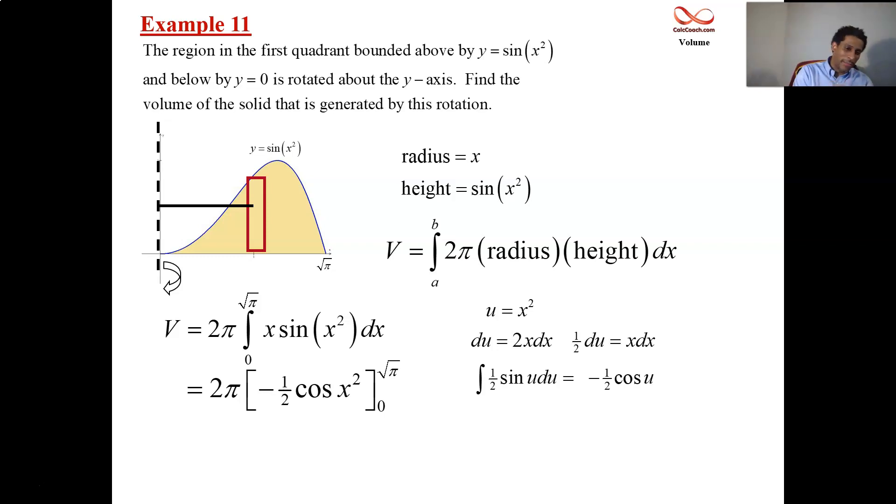We're ready to put in the root π and the zero, and we'll find out that we square that. Root π's quantity squared is going to be cosine of π, and then cosine of zero. Cosine of π is negative one, cosine of zero is one. They don't cancel, they're subtracted. And now there's a negative π on the outside. The two and a half canceling each other out. The answer is 2π. That's the volume.